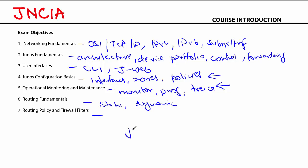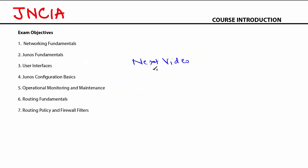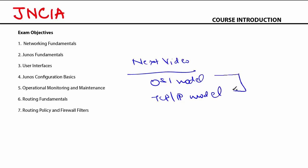You can get all information regarding certifications by going to juniper.net/certification. In the next video, we are going to start by looking at the OSI model and the TCP/IP model, and we are going to compare and see the differences between these two models. I'm really excited to see you there. Thank you for watching.